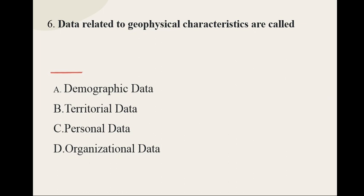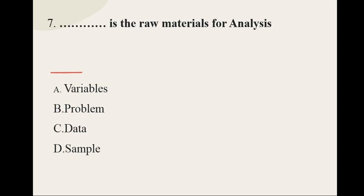Question number six: Data related to geophysical characteristics are called — options are demographic data, territorial data, personal data, and organizational data — and the correct option is territorial data.